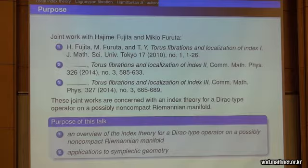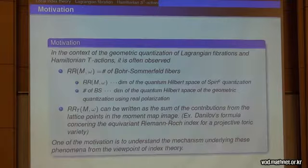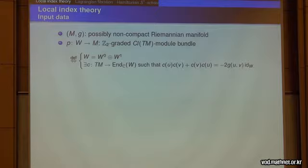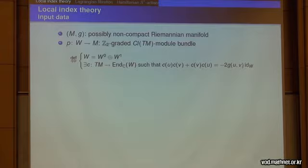Let me explain the index theory. The setting is as follows: the pair (M, G) is a possibly non-compact Riemannian manifold. W is a graded Clifford module bundle. By definition, this means W is the sum of two Hermitian vector bundles W₀ and W₁, equipped with a homomorphism C from the tangent bundle to the endomorphism of W, satisfying the Clifford condition.